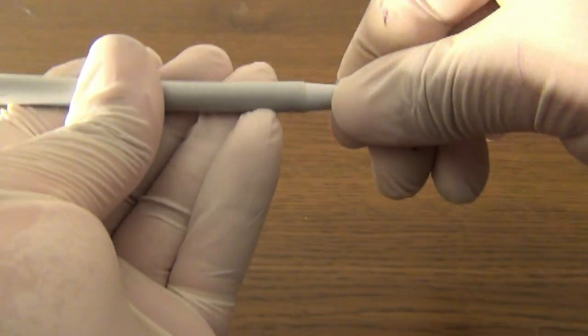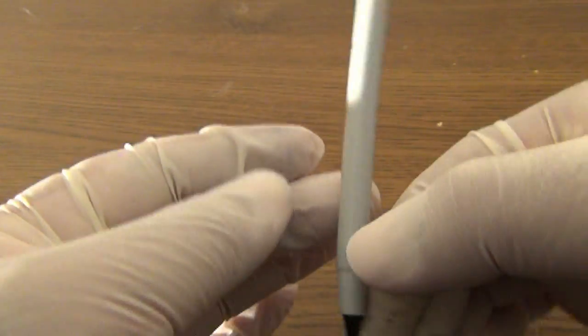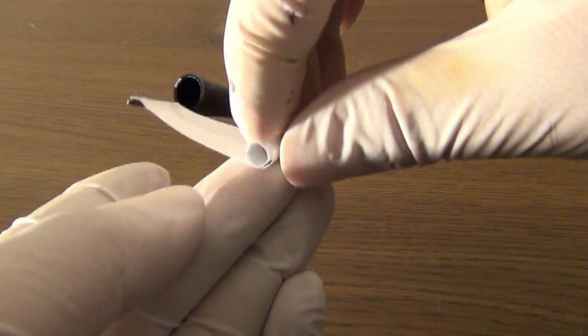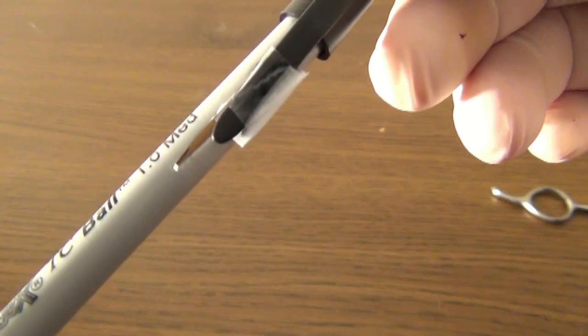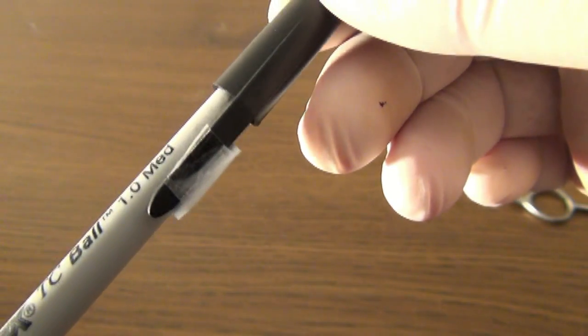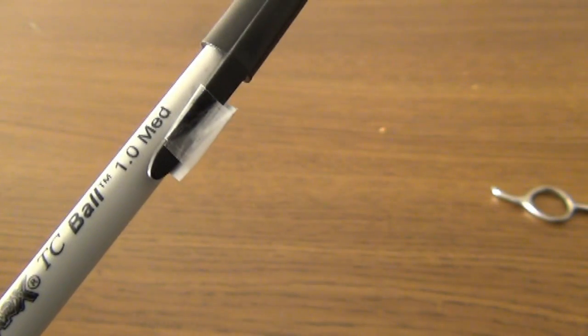Put the ink back in the pen. If needed, trim a bit so it does not get in the way. Now, roll up the cheat note and slide it inside the pen. Just make sure a piece sticks out through the slit.